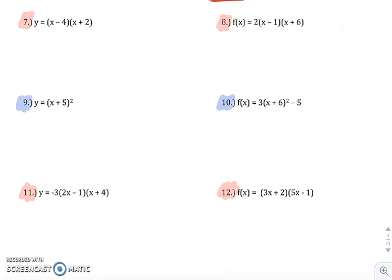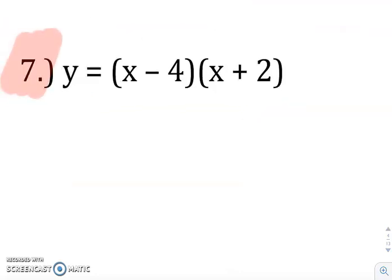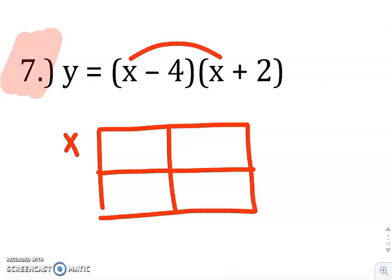So let's just practice rewriting some of these in standard form. So the first one is y equals x minus 4 times x plus 2. So we've got two sets of parentheses, so we'll go right to that generic rectangle or FOIL. Really, whatever method works, you should get the same thing.